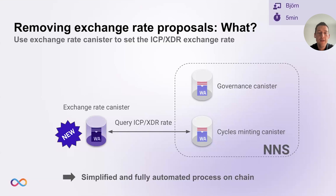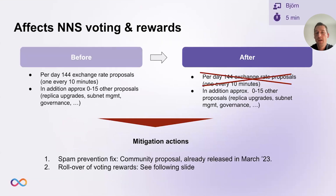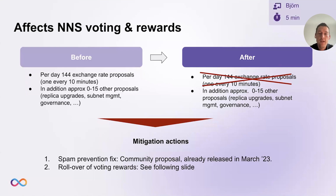It does have some implications on the NNS voting and rewards. Currently we process 144 exchange rate proposals a day. In addition to that, roughly zero to 15 other kinds of proposals. Once this change goes live, which is planned for next week, these 144 exchange rate proposals will go away. That's a significant change in the composition and number of proposals being processed. Hence a review was done, leading to two further actions. The first one is about spam prevention — this change going live as is would have increased the financial incentive to submit spam proposals. A community proposal was already implemented and released in March of this year to address that point.